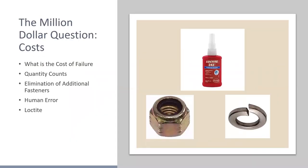Now we get to the million dollar question: what is the cost of a patch? Maybe the best answer is what does it cost us if we don't do it? The cost of failure, product returns, warranty issues, catastrophic failure. One of the benefits of a patch is it's already on the fastener, so in the assembly process you can't forget to put it on. With high quantities, that helps bring the price of the patch down.